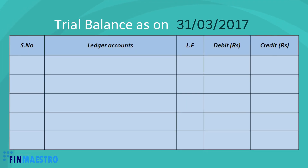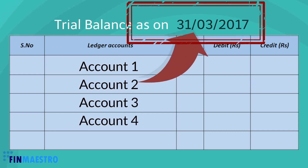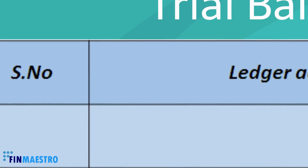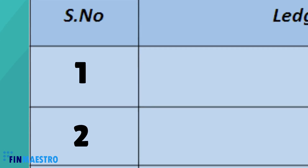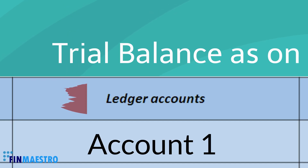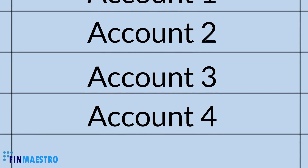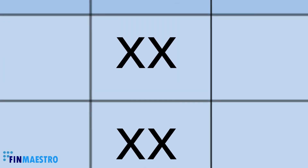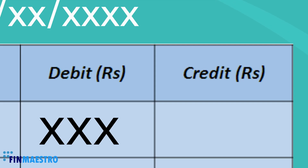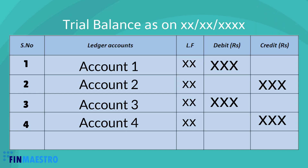For example, if it is 31st March 2017, the trial balance shows what the account balances are as on March 31st 2017. Now going through each column: the first column is the serial number, the second column is the name of the ledger account — note that all ledger accounts should be included. The third column is the ledger folio number, a reference showing from which ledger the balance comes. The next two columns are the debit amount column and the credit amount column.